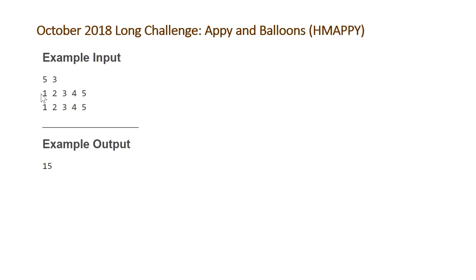In this example A and B happen to be the same values, but we'll look at a different example where they differ to make the distinction clear.